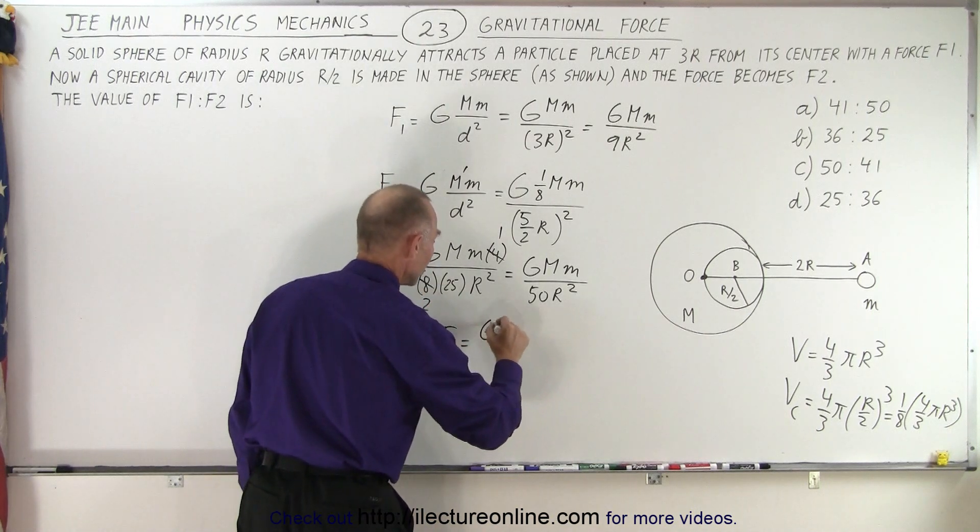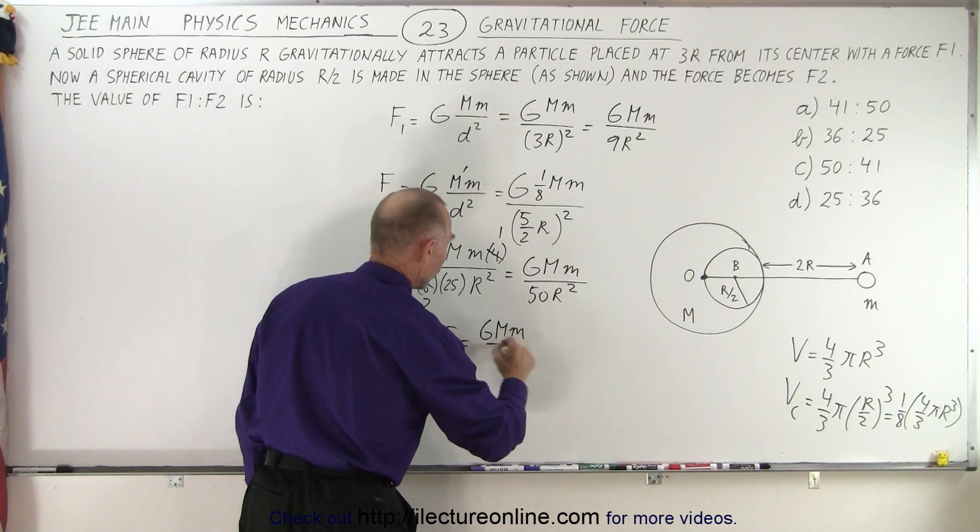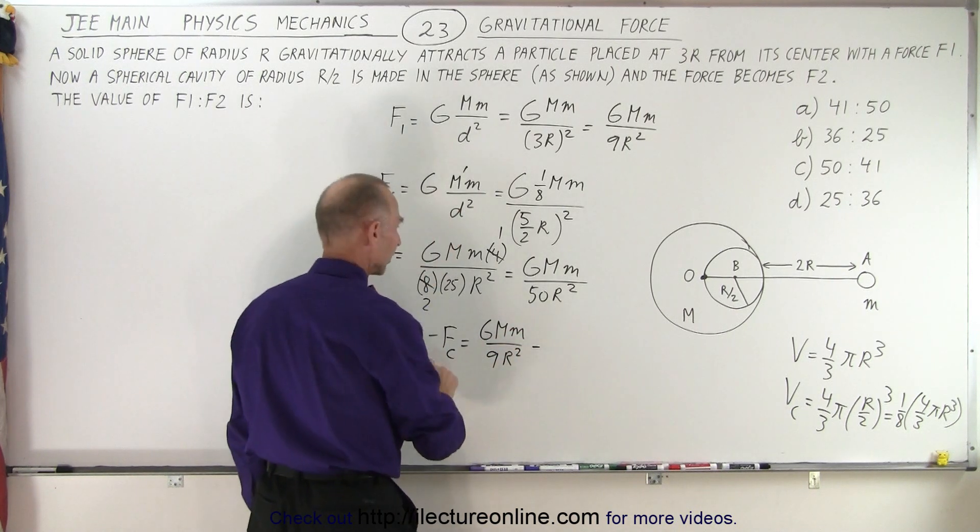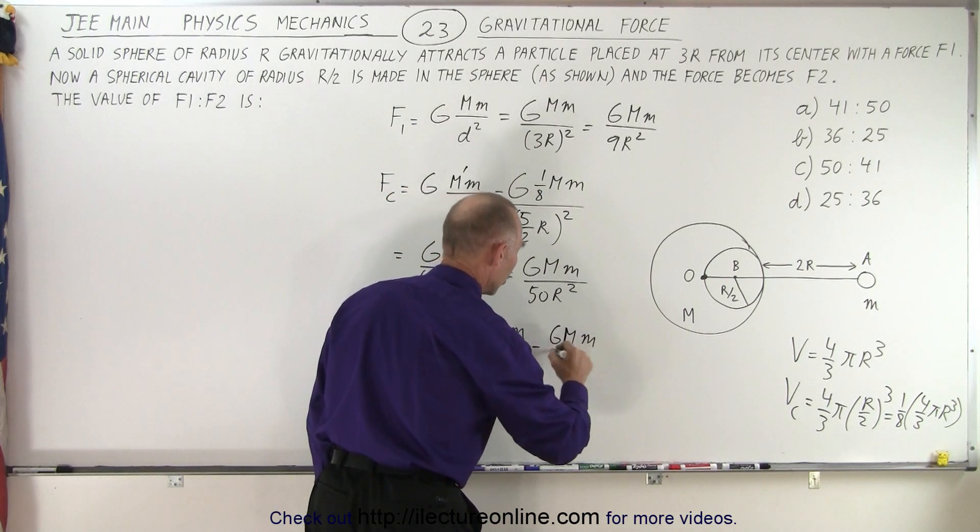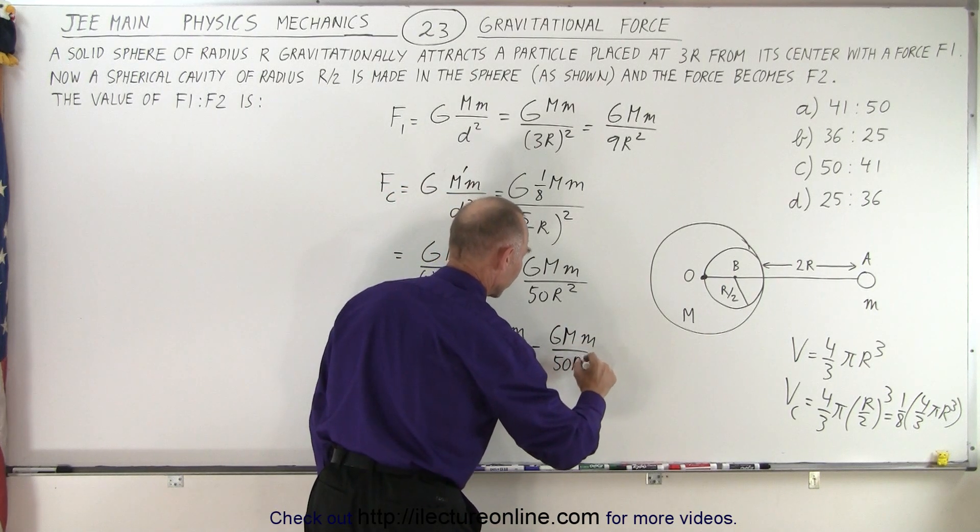So we end up with GMm over 9r² minus the force of the cavity which would be GMm over 50r².